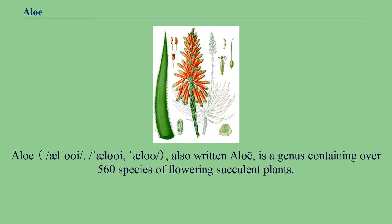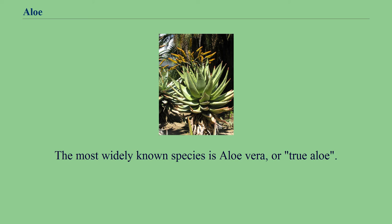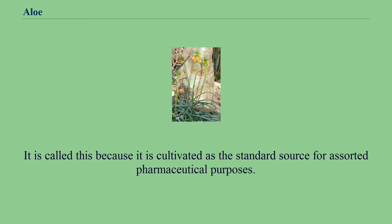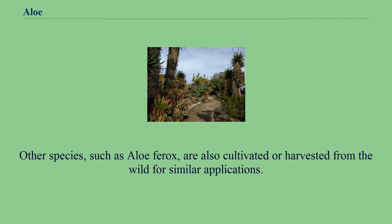Aloe, also written aloe, is a genus containing over 560 species of flowering succulent plants. The most widely known species is aloe vera, or true aloe. It is called this because it is cultivated as the standard source for assorted pharmaceutical purposes. Other species, such as aloe ferrox, are also cultivated or harvested from the wild for similar applications.